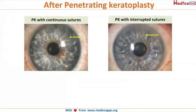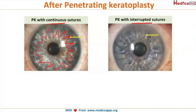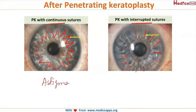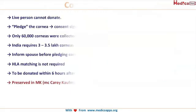Let's look at suture types. There can be two types depending on the surgeon's preference: continuous sutures or interrupted sutures. Continuous sutures appear all around the cornea, while interrupted sutures are equidistantly placed and separated from each other. Continuous sutures are known to cause some amount of astigmatism, whereas interrupted sutures cause much less corneal astigmatism after keratoplasty.